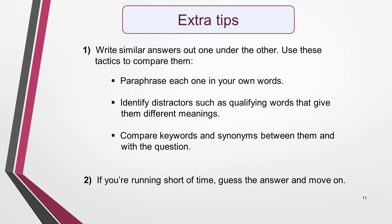It's common to end up with two very similar answer options that are difficult to decide between. When this happens, study them in even more detail to identify the difference. Write them out one under the other unless they already appear like that. You can paraphrase each one in your own words, identify distractors such as qualifying words that give them different meanings, and compare keywords and synonyms between them and with the question. If you get really stuck, take an educated guess — with two possible answers, you have a 50% chance of picking the correct one. Keep moving on through the test.